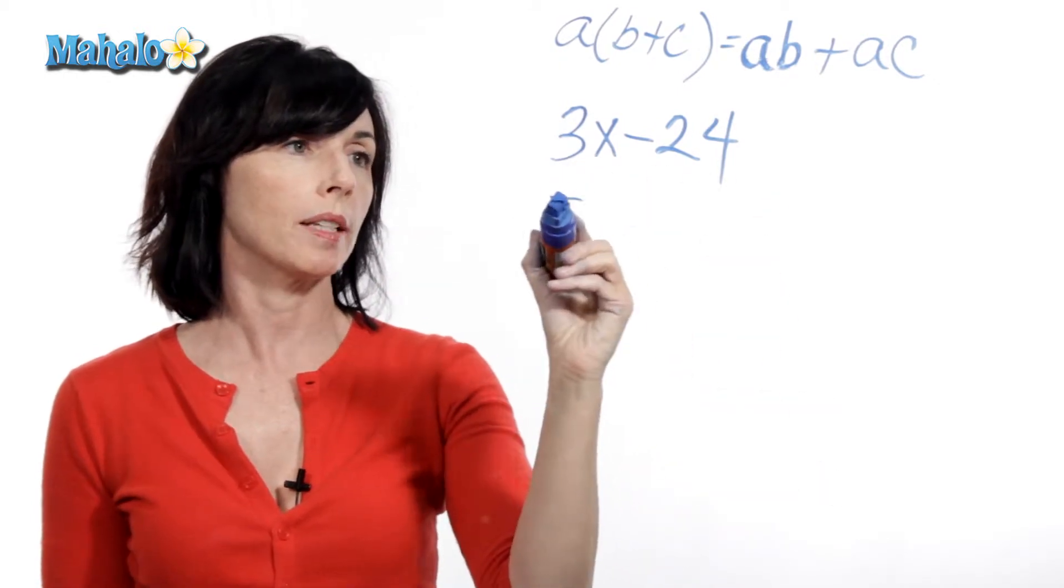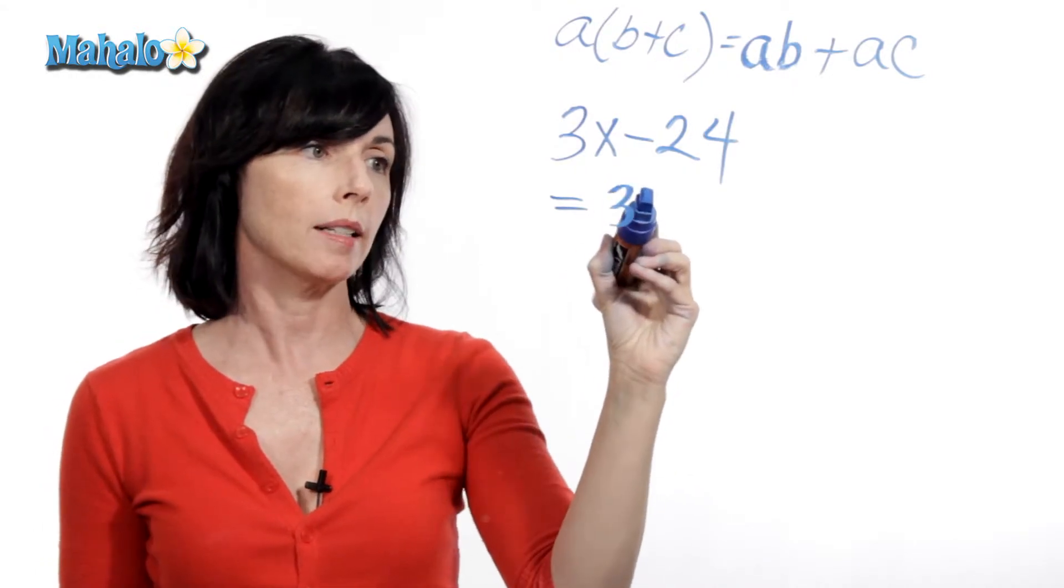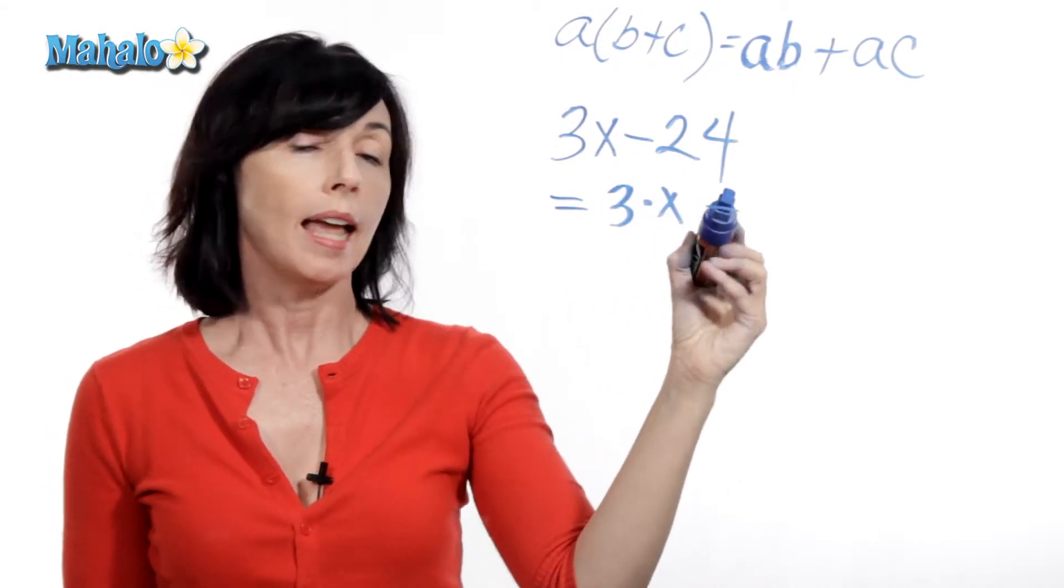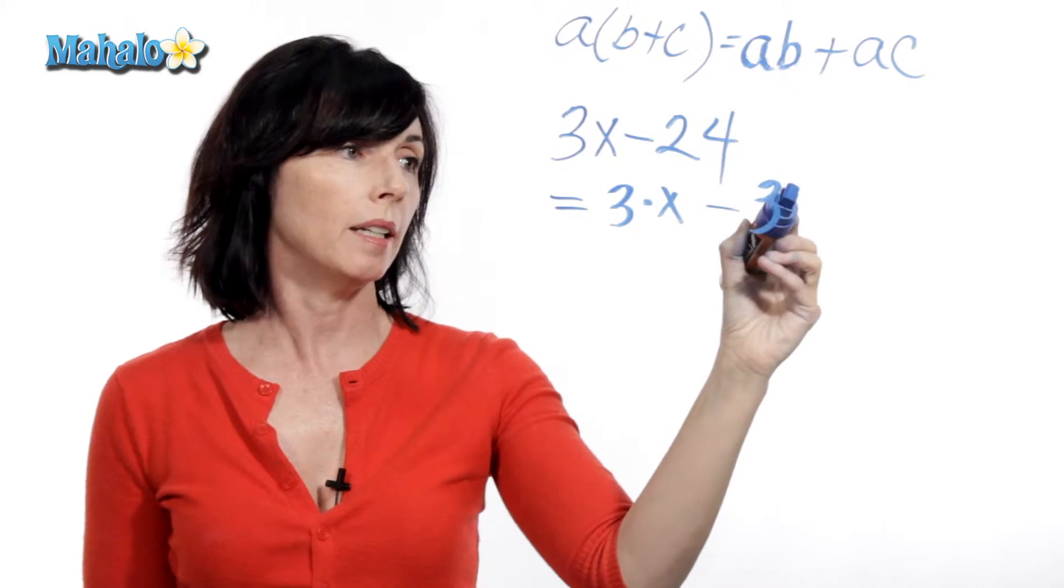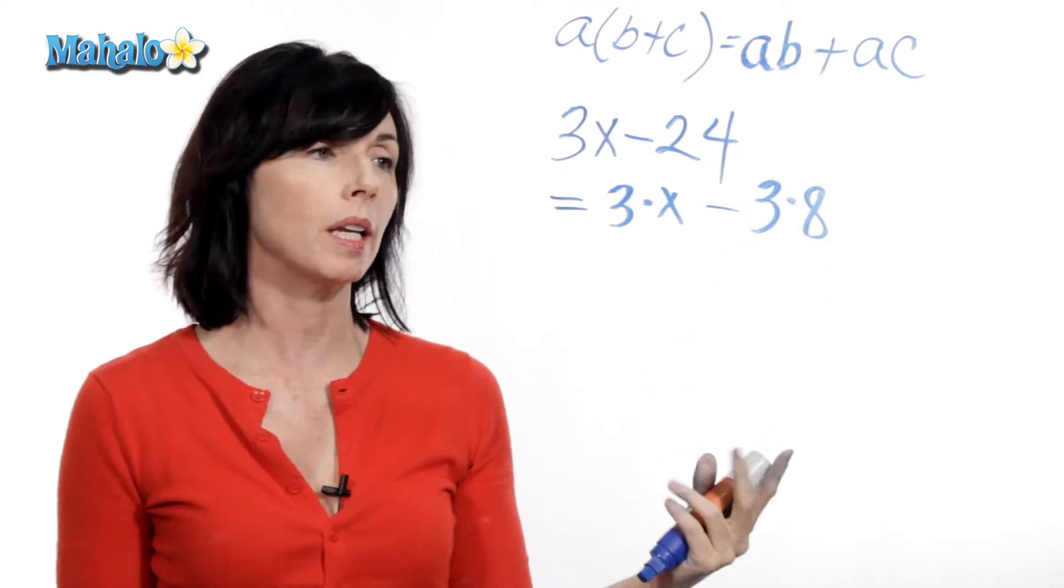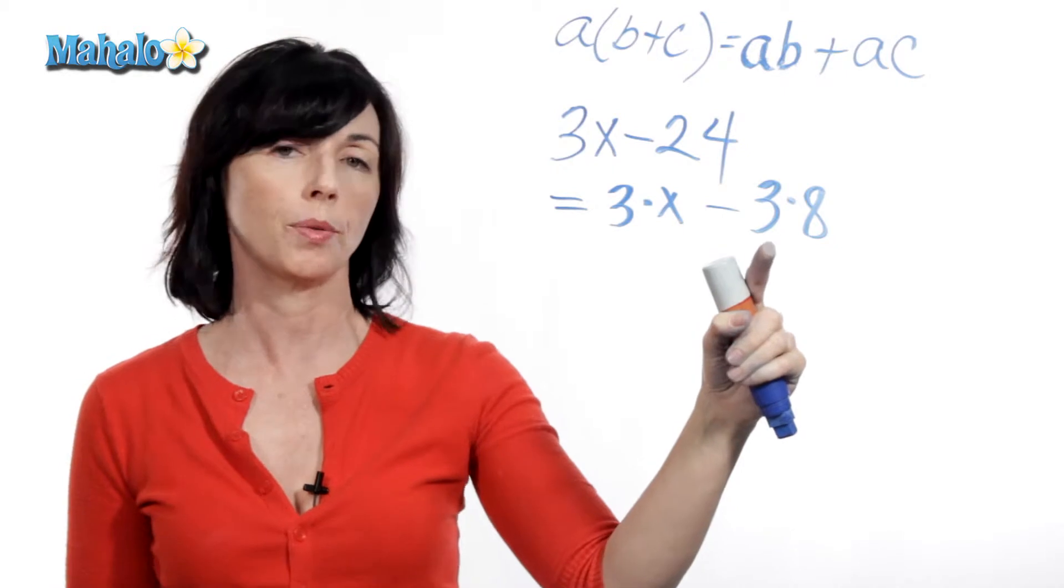So what about this? 3x is just 3 times x, and 24 is 3 times 8. So now I have something in common, a 3 here and a 3 here.